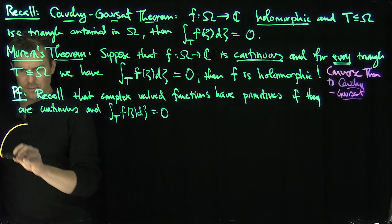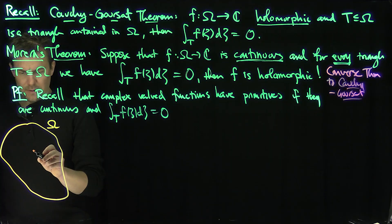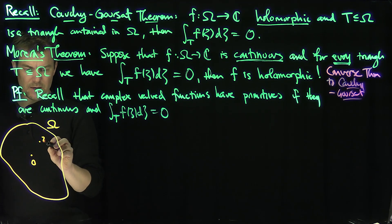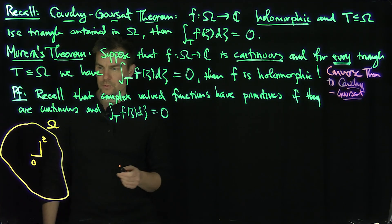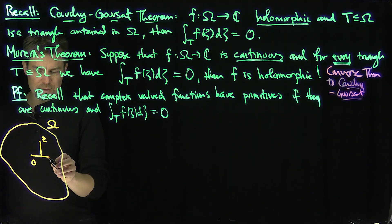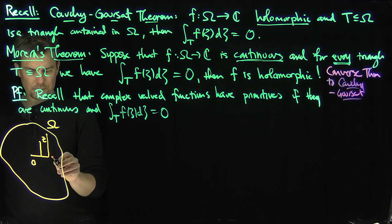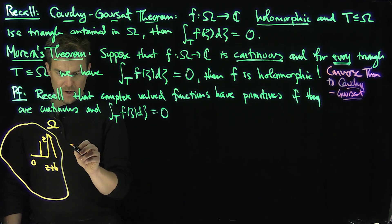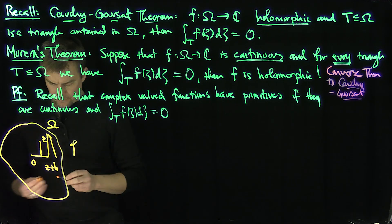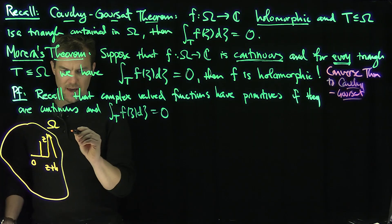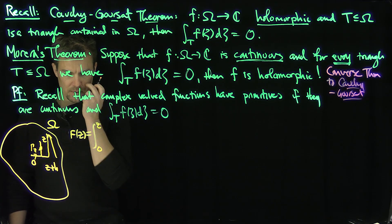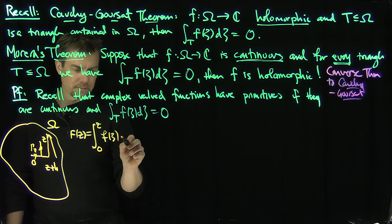Here was the idea: you had some set omega, and there was a point — without loss of generality, let's say that point is zero — and there was another point z. What you wanted to do is draw a line from zero to z; since it's open and holomorphicity is a local property, you can always do this for z sufficiently close. We define F(z) as the integral over this path γ_z from zero to z of f(ζ) dζ.